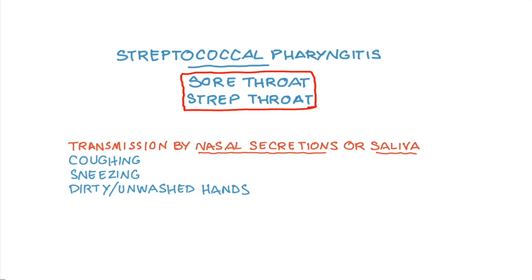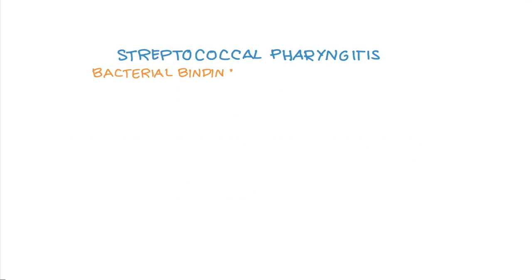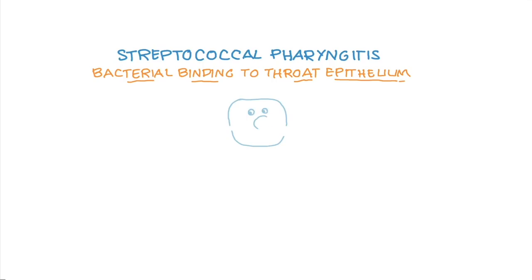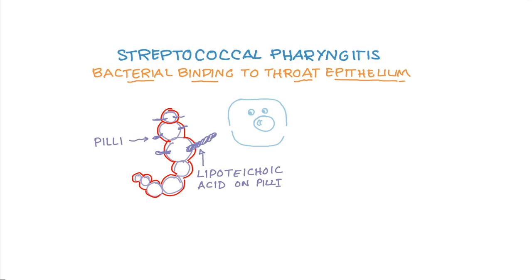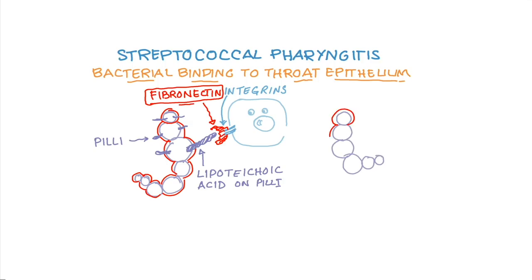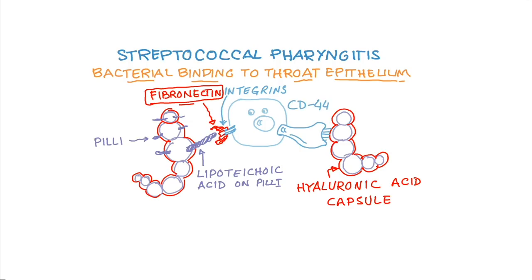Once streptococci are introduced into the pharynx, they bind to the epithelium by either of two mechanisms. First, pili from the pathogen — which are covered with lipoteichoic acid — bind to fibronectin on our epithelium, allowing adherence and infection. Alternatively, the hyaluronic acid capsule binds to the CD44 cluster on our epithelial cells, and that binding allows the pathogen to go deeper into the tissue and cause pharyngitis.